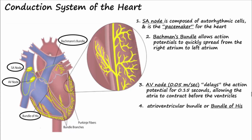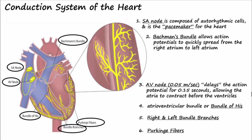In the septum, the bundle of His splits into the right and left bundle branches that descend through the interventricular septum to the apex of the heart. At the apex, the bundle branches split into numerous Purkinje fibers that then ascend the walls of the ventricles. The bundle of His, bundle branches, and Purkinje fibers conduct the action potentials much faster than the cardiac muscle fibers — at 1 to 4 meters per second versus 0.3 to 0.4 meters per second, respectively.